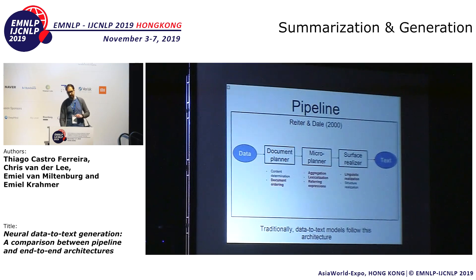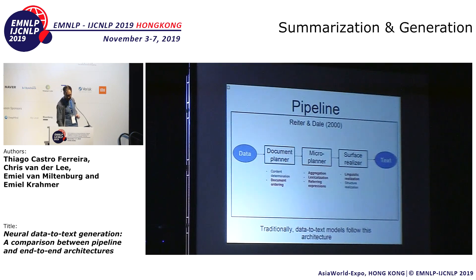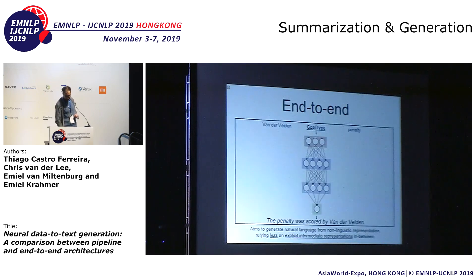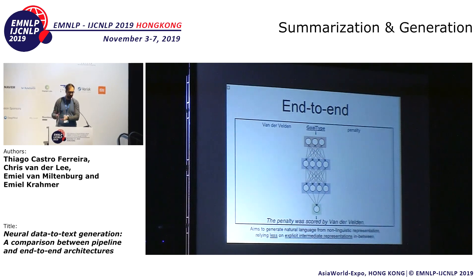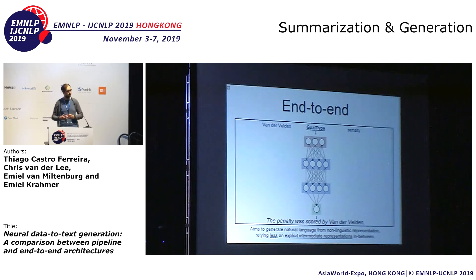The pipeline architecture that we're using is going to use most of these traditional modules as well. End-to-end is more popular nowadays. It's just very straightforward, or at least it seems to be. You have your input data, you put it into a neural network and fluent text comes out. No more explicit intermediate representations in between — just going directly from data to text.